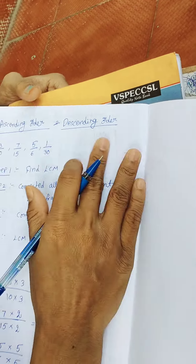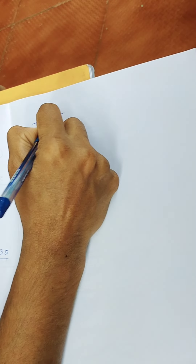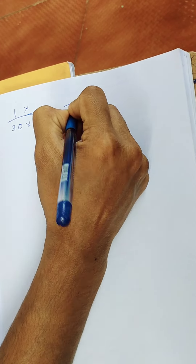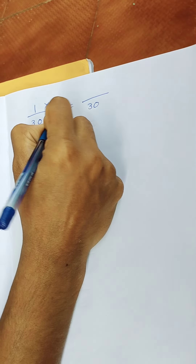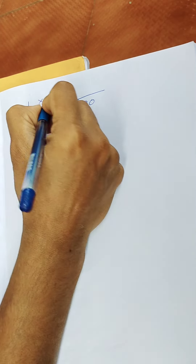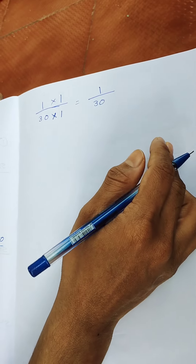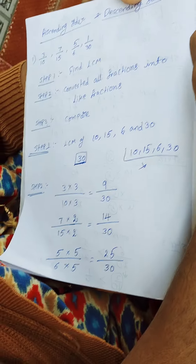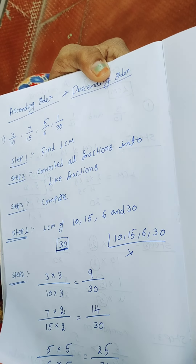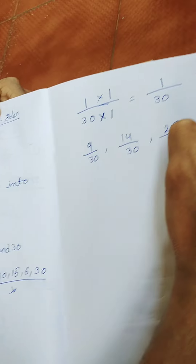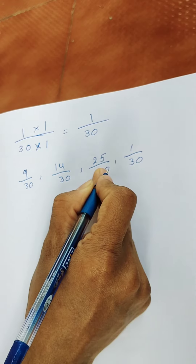The last fraction is 1 by 30. The denominator is already 30, so we multiply both numerator and denominator by 1, giving 1 by 30. So the new like fractions are: 9 by 30, 14 by 30, 25 by 30, and 1 by 30.